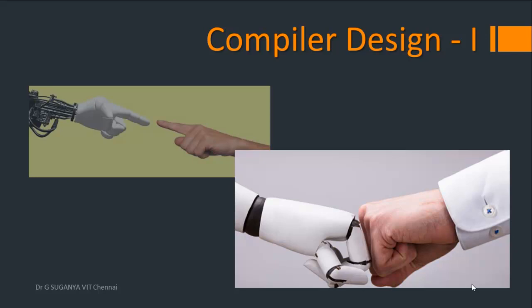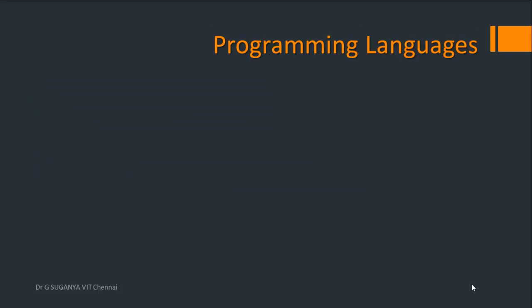The compiler is a translator which will convert the machine understandable format to a human understandable format and vice versa. Before getting technically into how this task is being done, let's have a look at the evolution of programming languages.